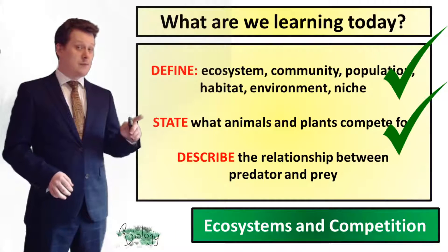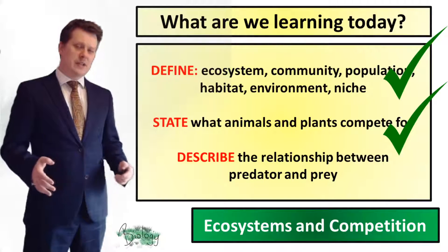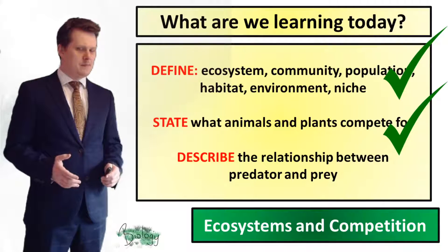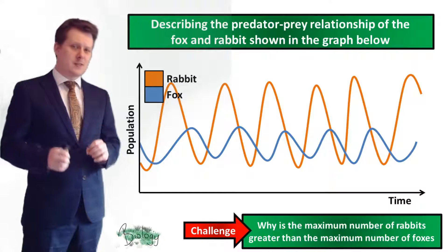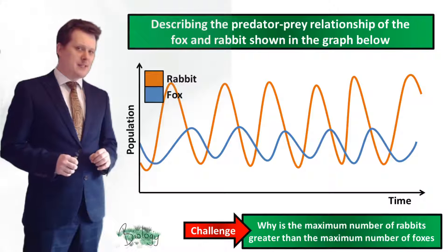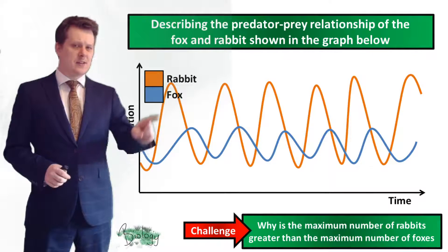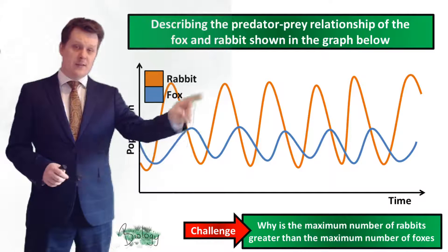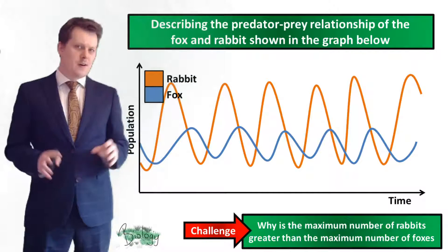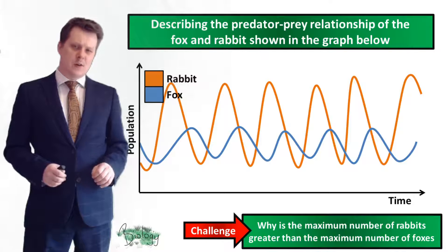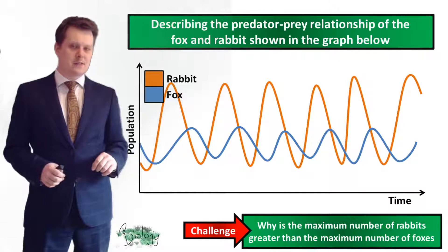Next we're going to describe the relationship between predator and prey. Here we've got a model example of a graph that shows the number of foxes and rabbits within a habitat. You can see that the number of rabbits increases and then decreases and follows that pattern all the way to the end of the graph. Same with the fox — it increases and decreases and does so all the way to the end of the graph.